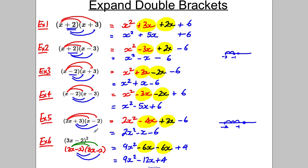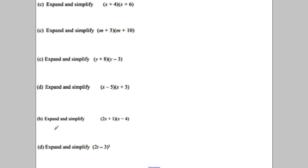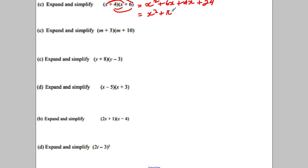Try these on the back of your revision card — make sure you can do them. Doing the first one: we get x² + 6x + 4x + 24, which gives x² + 10x + 24.